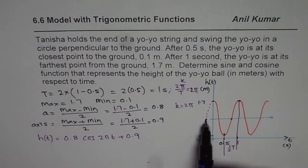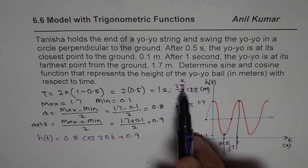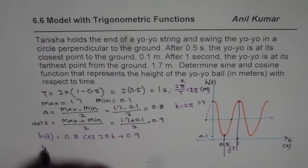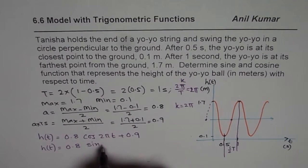So quarter of the cycle here is one fourth of 2π, which is π by 2. So we could write h(t) equals to 0.8 sin of 2π is a k value,